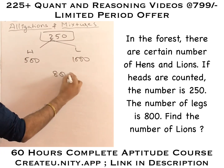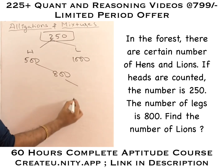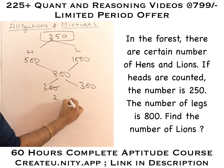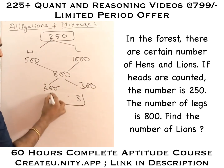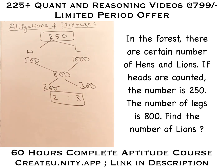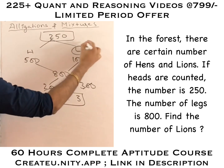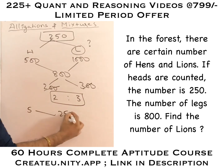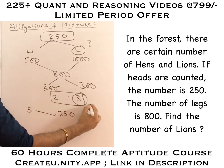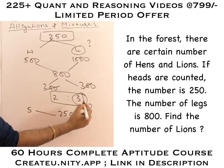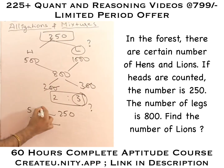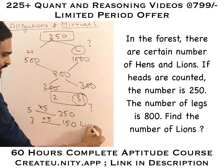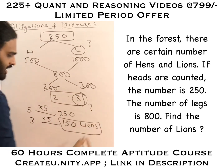But he has given it as 800 legs. If I cross subtract, this is 300 and this is 200. If I take the ratio, it is 2 is to 3. Now I got the ratio as 2 is to 3, and he is asking me to find out total lions. Total is 5 parts. 5 parts is 250. He is asking me to find out 3 parts, because lions are 3 parts. 5 fives are 25 — and a zero. 3 fives are 15 — and a zero. So total number of lions are 150.